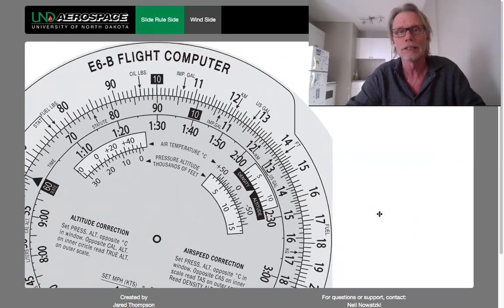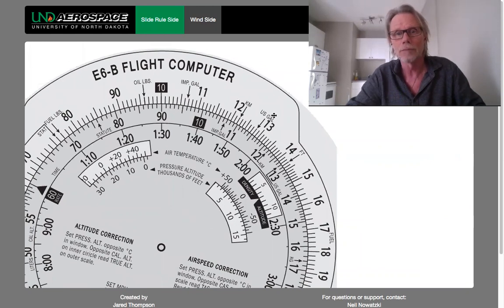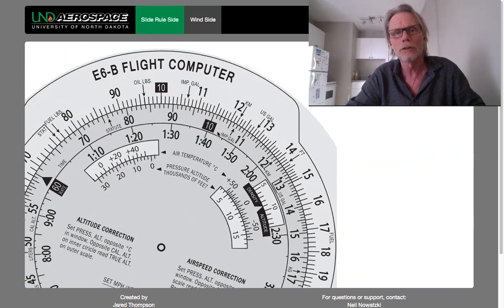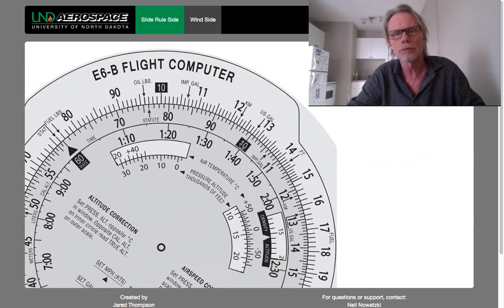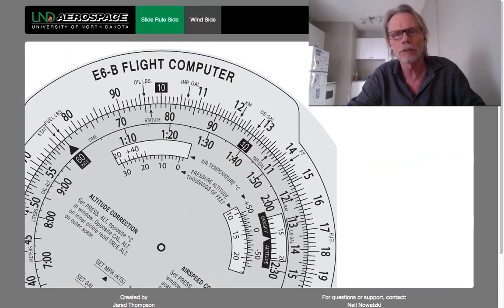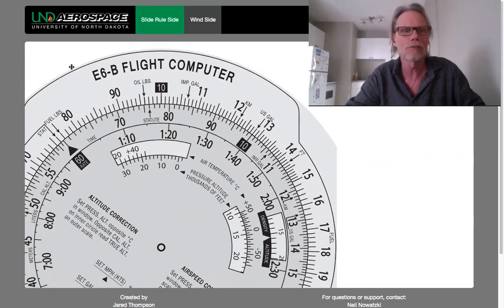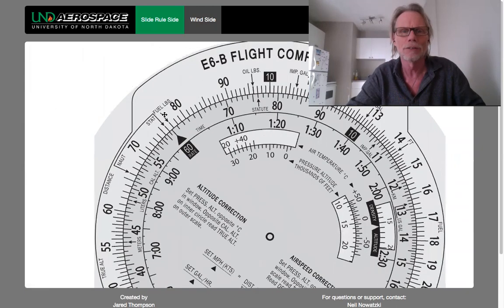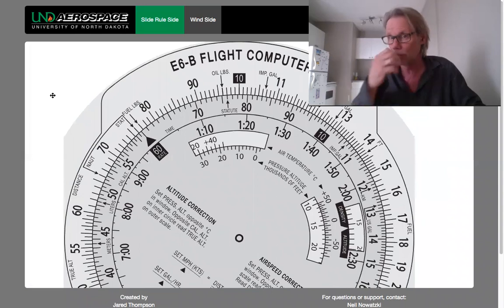Here's U.S. gallons arrow. If I was to put one U.S. gallon, so I'll put this 10 which will represent one on the U.S. gallons, I can actually find fuel pounds arrow and you can see that the fuel pound is pointing just a little bit above the 60 which means six. So that proves that it's little over six pounds per U.S. gallon.